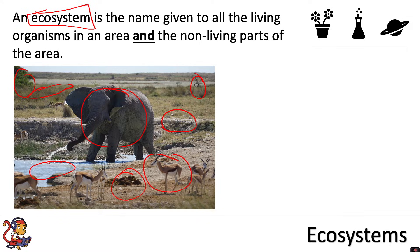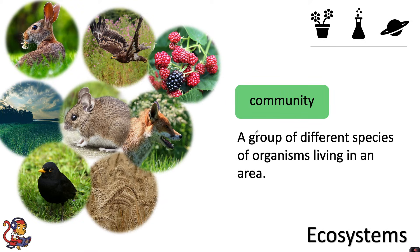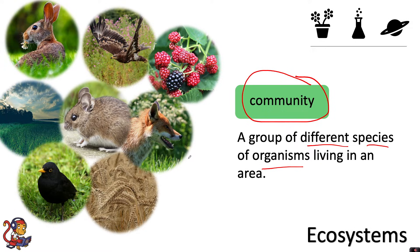You can look at a smaller level and rather than looking at all of the living and non-living parts, you could just be interested in all of the living species. In that case, you'd be interested in looking at a community, because a community is a group of different species of organisms living in an area. When you're talking about community, you're not talking about all the non-living things like rocks and soil and water — you're instead just looking at all of the different types of animals, plants, fungi, bacteria, etc. that you would find within a particular area.